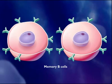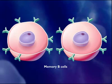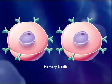the secondary immune response to a future infection by the same pathogen is swifter and stronger. This powerful secondary immune response is what gives immunity to some diseases after you have had them once or after you have been vaccinated.